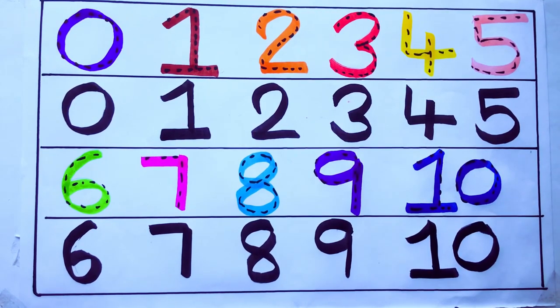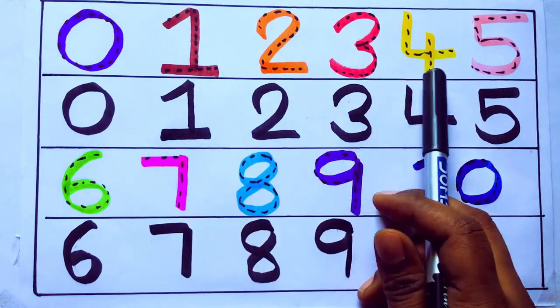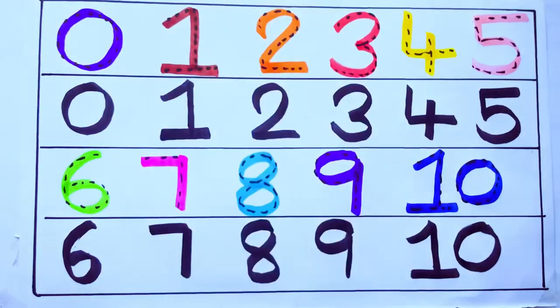One second learning numbers: 0, 1, 2, 3, 4, 5, 6, 7, 8, 9, 10. Okay. Bye kids.